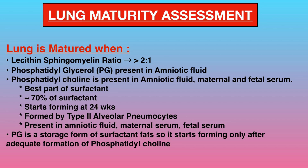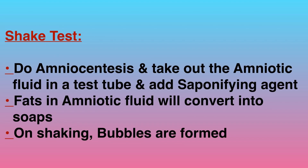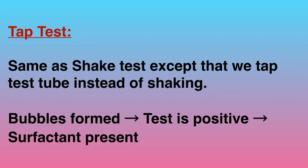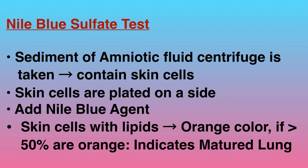Phosphatidyl glycerol is a storage form of surfactant fats, so it starts forming only after adequate formation of phosphatidyl choline. Now let's understand how the shake test is done. Perform amniocentesis and take out the amniotic fluid in a test tube and add a saponifying agent. The fats in the amniotic fluid convert into soaps, after which on shaking, bubbles are formed. The tap test is the same as the shake test except that we tap the test tube instead of shaking — bubbles are formed, which means the test is positive and proves surfactant is present.